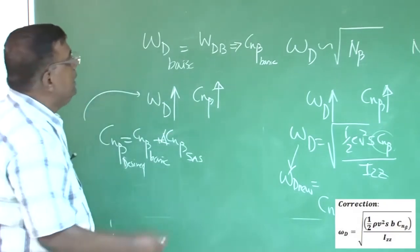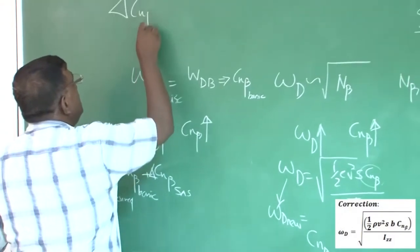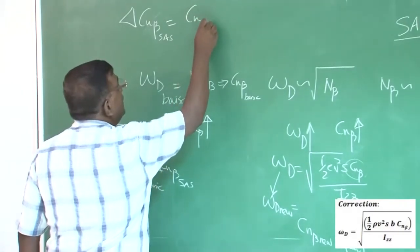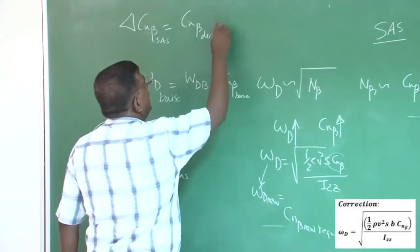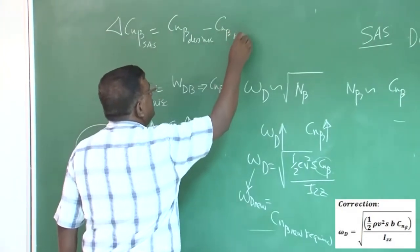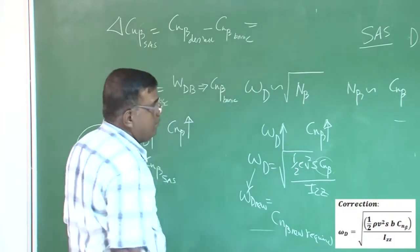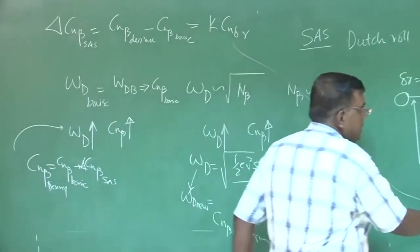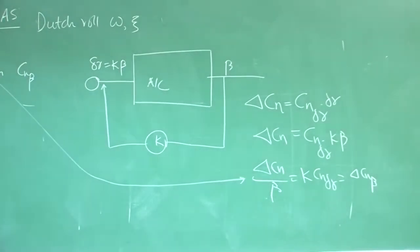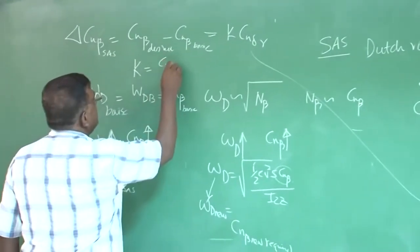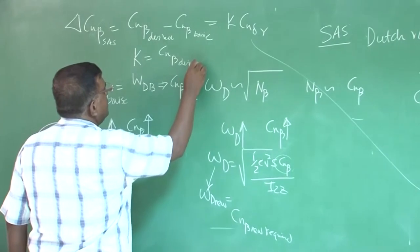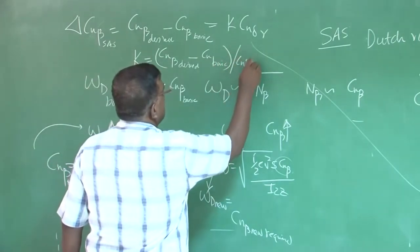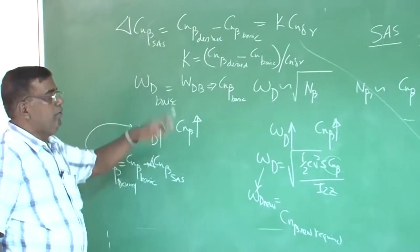So, I have got c n beta is c n beta basic plus c n beta, which will come from SAS. That is the additional and this is the required or desired or required whatever you say. Who decide this, here may decide that is linked to whatever omega d required, which we got approximately from here. So, now, I know that delta c n beta SAS,